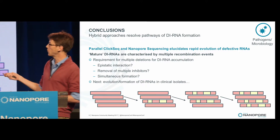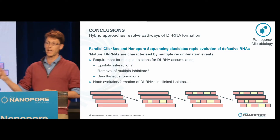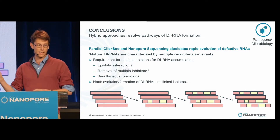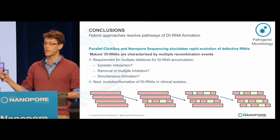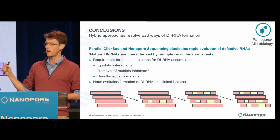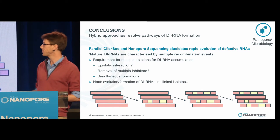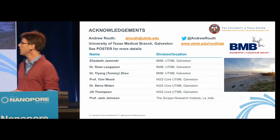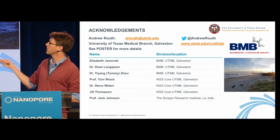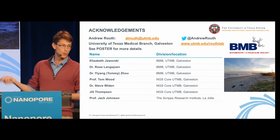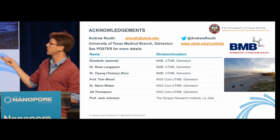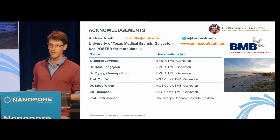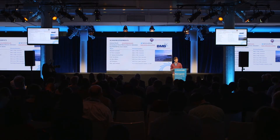This gives us very important information about how diRNAs evolve and mature. We're hoping to take this into the clinic to characterize defective interfering RNAs in actual patient samples. All this work was done by Elizabeth Drowarski, who is here and will be presenting the poster with me later today. If you have any questions, please get in touch. Thank you very much.